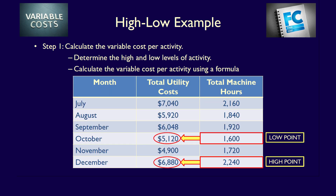In our data, the high cost is whatever cost relates to the high activity level. Since the high activity is 2,240 machine hours in December, the high cost is $6,880. The low cost relates to the low activity — October with 1,600 machine hours and $5,120 in costs.